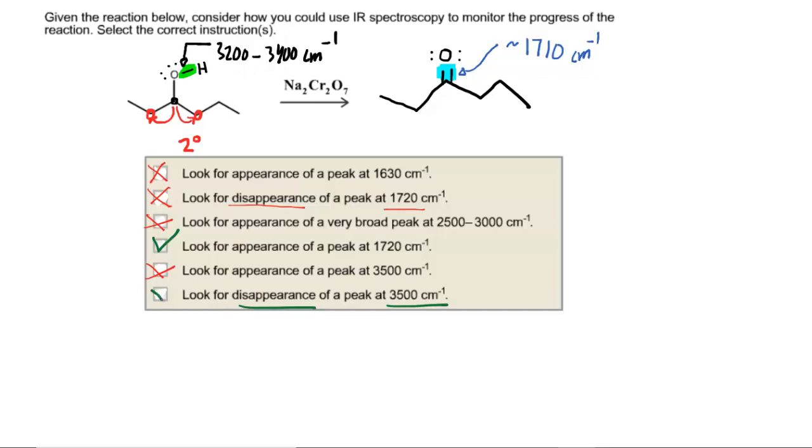Going from a reactant to product we certainly have a loss of that signal, so the final answers would be an appearance of a peak at 1720 and then a disappearance of a peak at 3500.